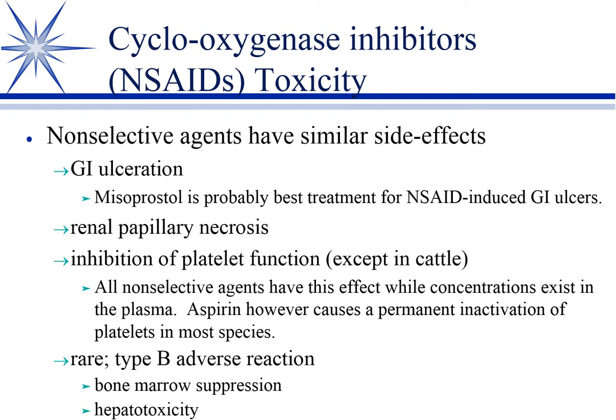Going back to the stomach and the kidney, this brings us to the toxicities. If you use these, you need to know how to use them and what to watch for. GI ulceration: prostaglandin E produces that normal cytoprotective mucus. When it's gone, you get a thin, watery mucus that doesn't protect against stomach acid, and you can get an ulcer.